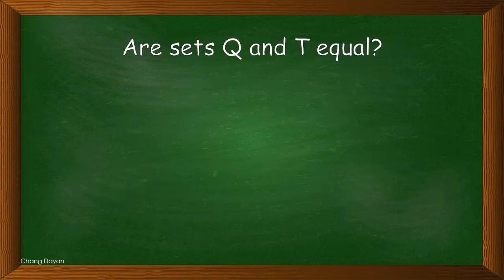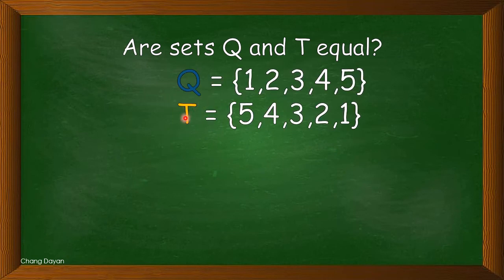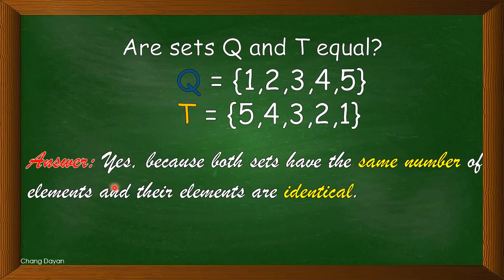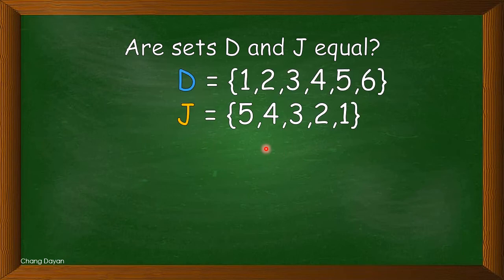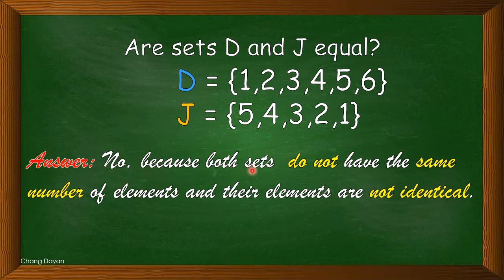Next, are sets Q and T equal? The answer is yes, because both sets have the same number of elements — five — and their elements are identical; we can see the same elements in both sets. Are sets D and J equal? The answer is no, because both sets do not have the same number of elements. Set D has six elements while set J has only five elements, and their elements are not identical.